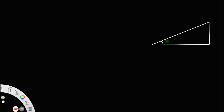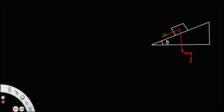Consider an inclined plane where theta is the angle of inclination. Let a body of mass m be placed on the inclined plane. The different forces acting on the body: first is mg, the weight of the body, acting vertically downward. This mg can be resolved into two components — one along the plane and one perpendicular to it.